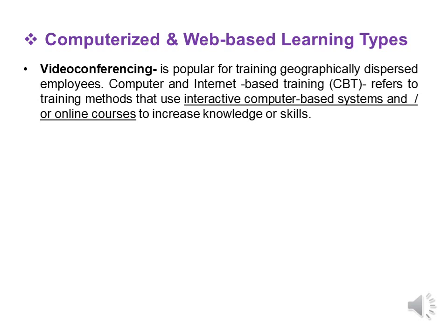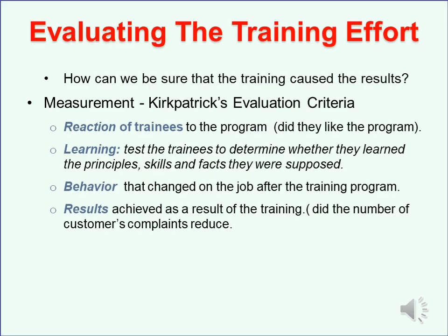The final step in the training process is evaluating training efforts. The most popular model is the Kirkpatrick evaluation criteria, which evaluates: the reaction of trainees — whether they like or dislike the program; learning — testing trainees to determine whether they have learned the principles, skills, and facts they were supposed to learn; behavior — whether their behavior has changed when they return to their jobs; and results.